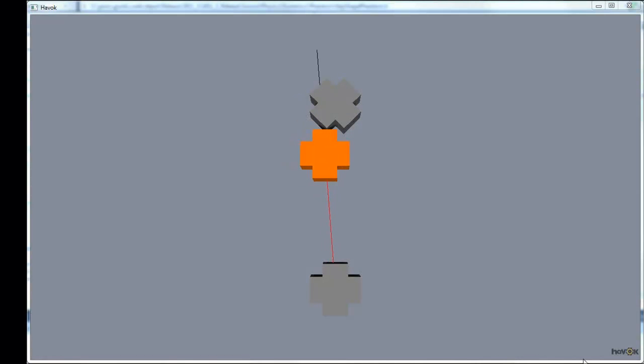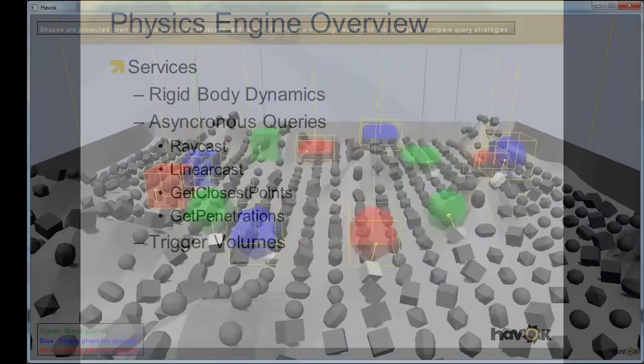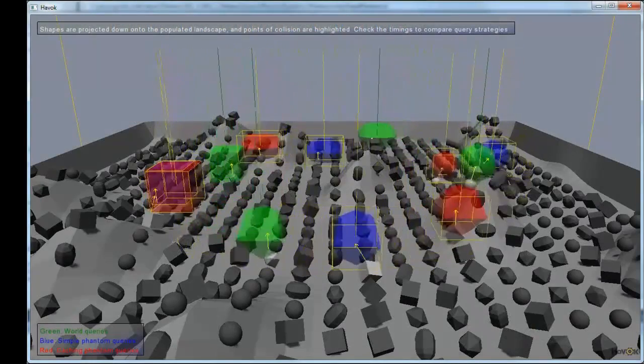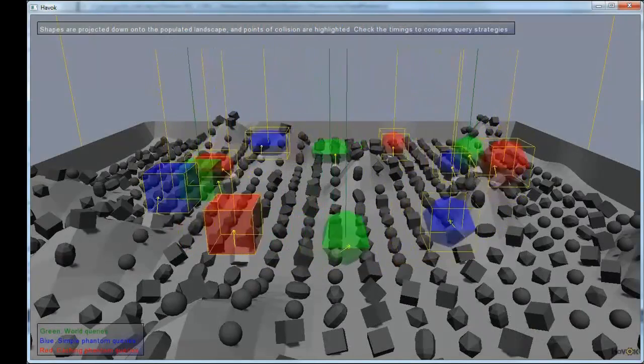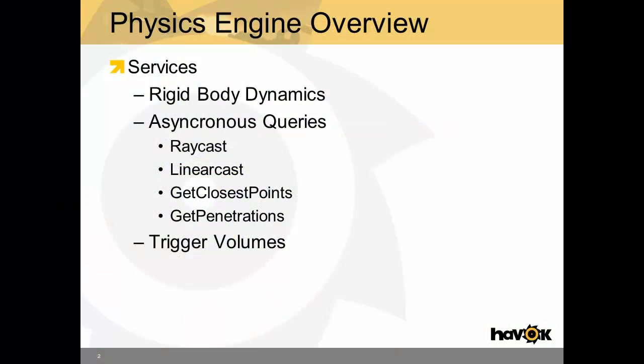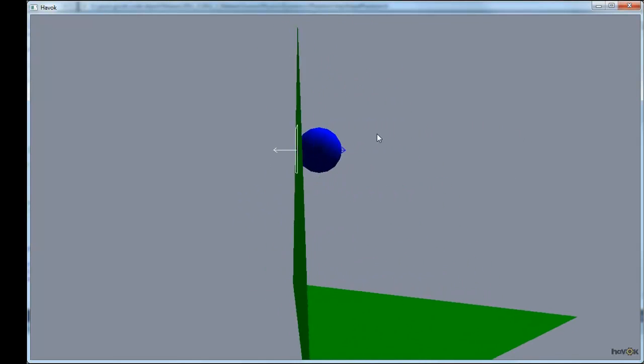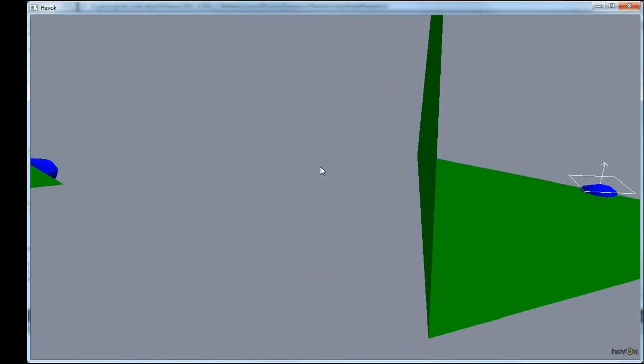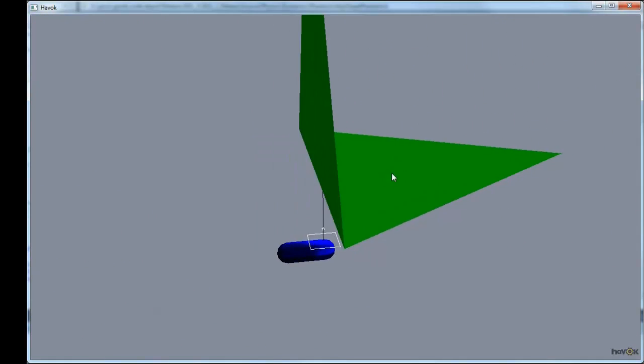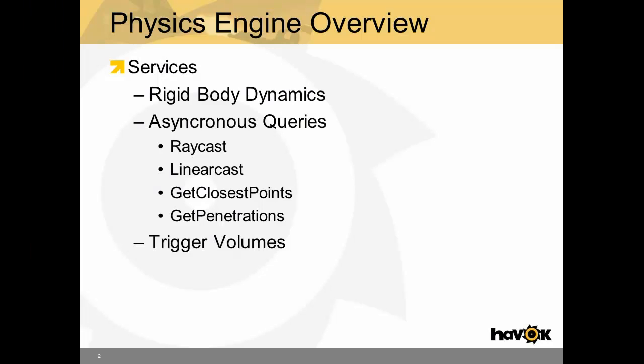Linear casting is similar to ray casting, but it's a shape through the world. So this is very useful for things like camera collision detection. So can I move my camera from this position to this position without hitting a wall? There's get closest points. What is the closest point in the physical world to my query shape? This is good for placing things in the world. And get penetrations. Does this object currently penetrate anything?